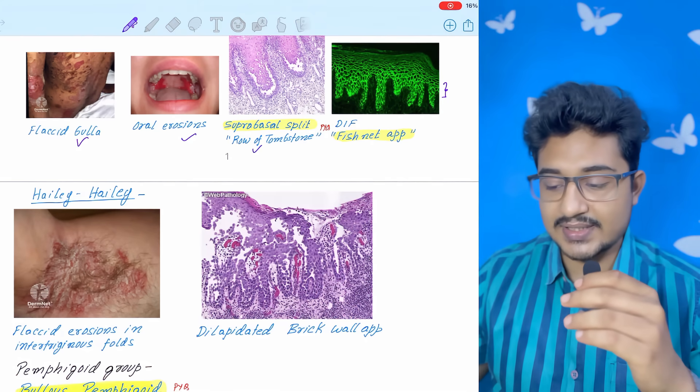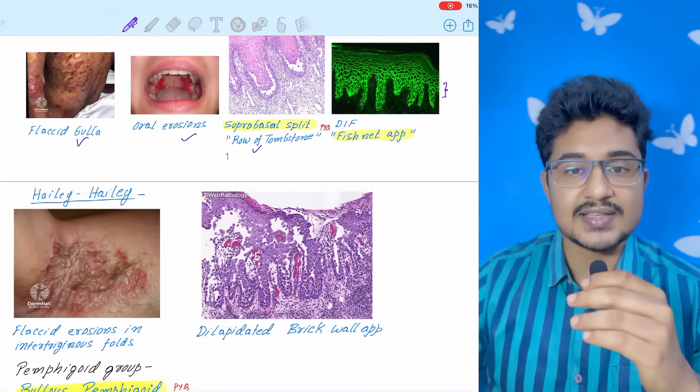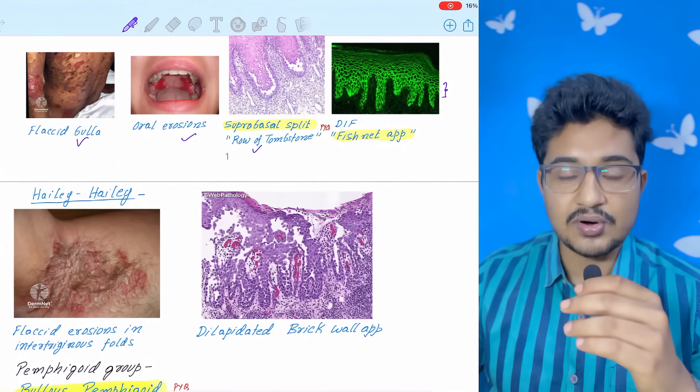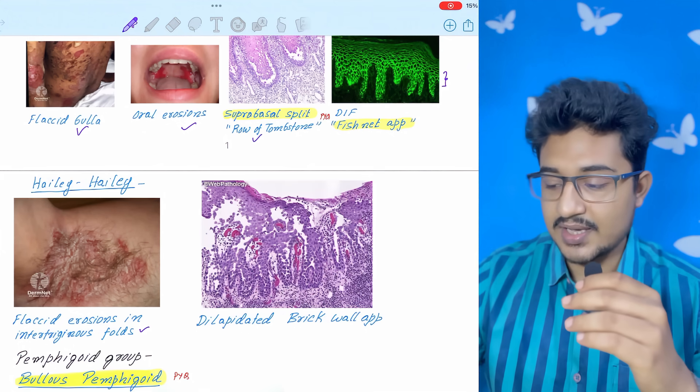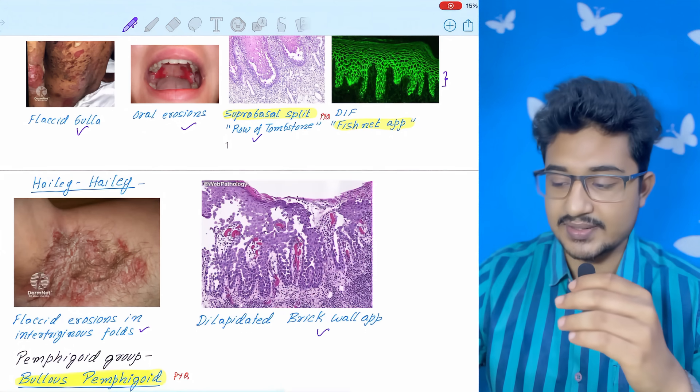Another genetic disorder is Hailey-Hailey disease. There are flaccid erosions on the axilla and groin, that is the intertriginous area. Here you will see dilapidated brick wall appearance.